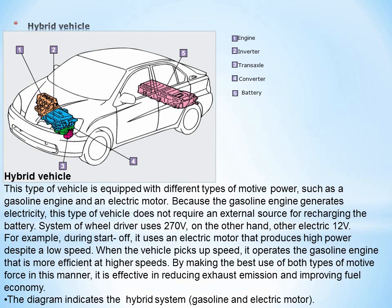Hybrid vehicle: This type of vehicle is equipped with different types of motive power, such as a gasoline engine and an electric motor. Because the gasoline engine generates electricity, this type of vehicle does not require an external source for recharging the battery. The system of wheel drive uses 270 volts, while other electrical systems use 12 volts. During start-off, it uses an electric motor that produces high power at low speed. When the vehicle picks up speed, it operates the gasoline engine, which is more efficient at higher speeds. By making the best use of both types of motive force, it is effective in reducing exhaust emissions and improving fuel economy. The diagram indicates the hybrid system with gasoline engine and electric motor.